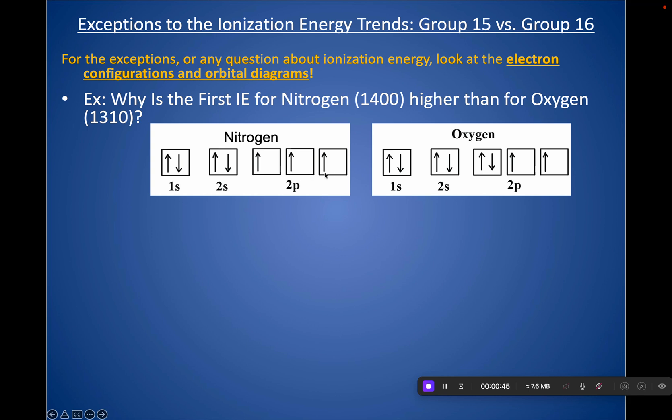If I'm looking at nitrogen, I have all unpaired electrons. So I'd be removing an unpaired electron. But if I look at oxygen, I have a pairing of electrons here. And if I put two electrons in the same orbital, what would those electrons do with each other?